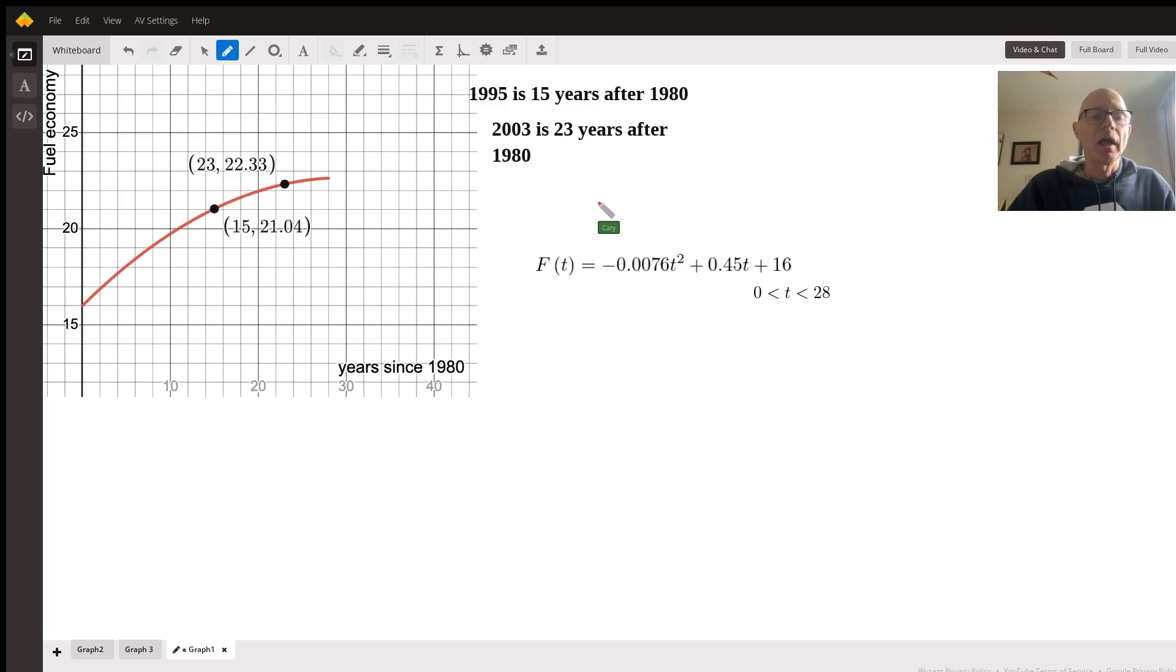So in order to find these spots on the curved graph, I used 15 as the input to the function, having 15 replace both of the T's in the function, and then generating the function output of 21.04 approximately. Then also having 23 replace T in both places in the function, generating an output of 22.33 approximately. So we have these two exact spots on our curved graph.